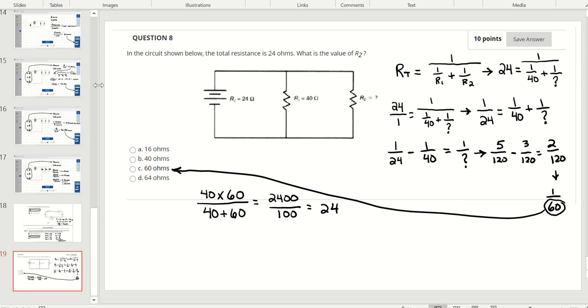This video instruction is for Basic Electricity Chapter 8 assignment question number 8. The question is: in this circuit shown, the total resistance is 24 ohms. What is the value of resistor number 2?